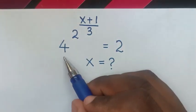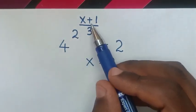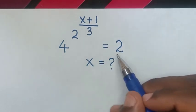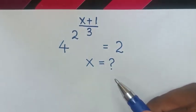Hello, how to solve 4 to the power of 2 to the power of (x+1)/3 equals 2, to find the value of x.